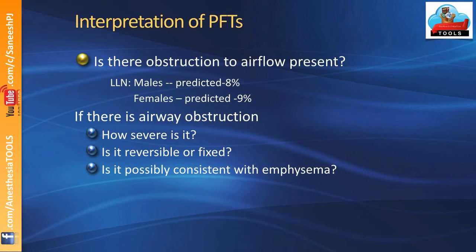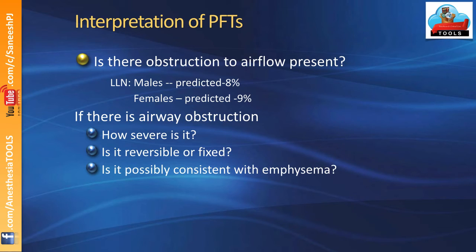If airflow obstruction is present — indicated by a reduced FEV1/FVC ratio — your next step is to grade its severity. Some PFT reports give the lower limit of normal; others give the predicted value, where predicted minus 8 percent is the lower limit of normal for males and predicted minus 9 percent for females. Once you diagnose airway obstruction, grade the severity.